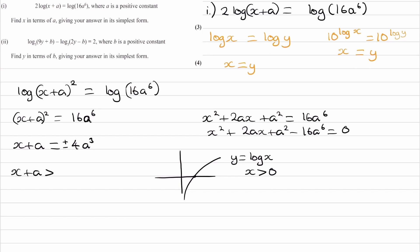So we know that x+a is bigger than 0, and that means that x+a must equal the positive variation. So 4a to the power of 3.